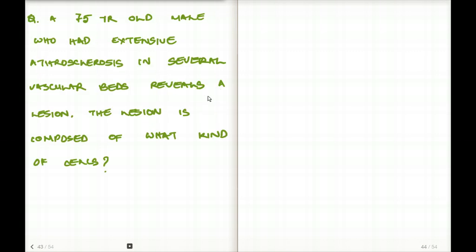Now, last example, a 75-year-old male who had extensive atherosclerosis in several vascular beds reveals a lesion. The lesion is composed of what kind of cells? Again, if there is atherosclerosis resulting in a lesion, the lesion is going to be composed later on in life - he's 75 years old, so if he had a lesion earlier, that's going to be taken care of by cells, which are astrocytes.